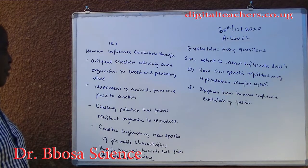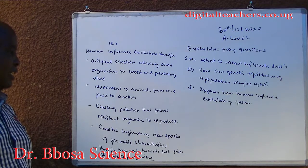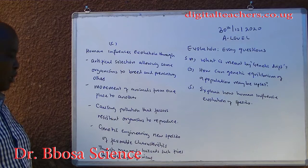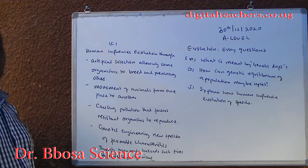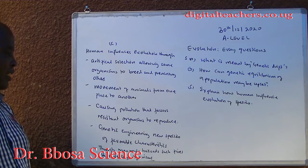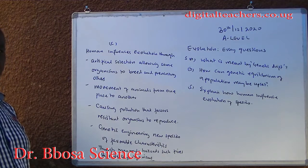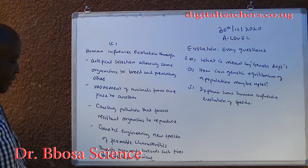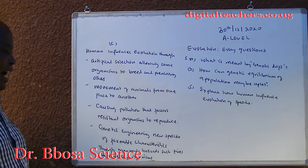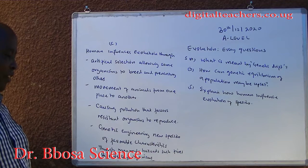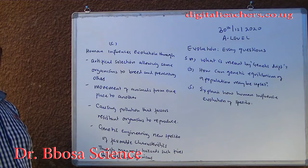Causing pollution that favors resistant organisms to reproduce. Genetic engineering creates new species with favorable characteristics. Making hazards such as fire that destroy organisms.